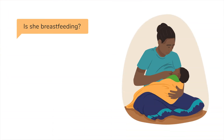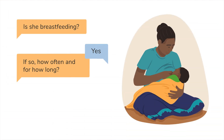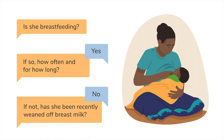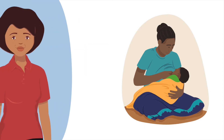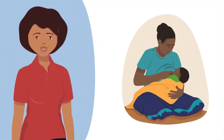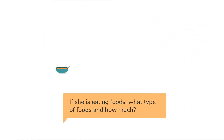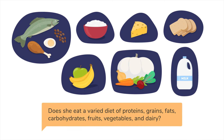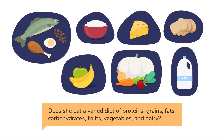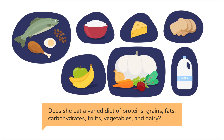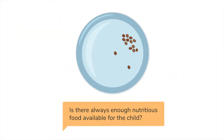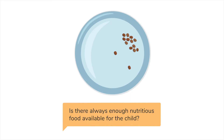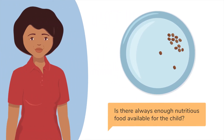You can ask: is she breastfeeding? If so, how often and for how long? If not, has she been recently weaned off breast milk? A breastfeeding child may not be getting enough milk, or since weaning, the child may not be getting enough nutrition from foods. If she is eating foods, what type of foods and how much? Does she eat a varied diet of proteins, grains, fats, carbohydrates, fruits, vegetables and dairy? Is there always enough nutritious food available for the child? Low amounts of food or a limited variety of foods can result in undernutrition.